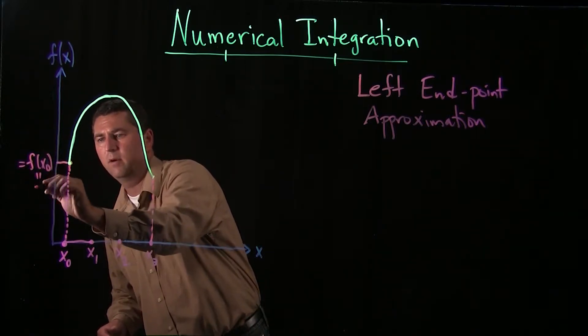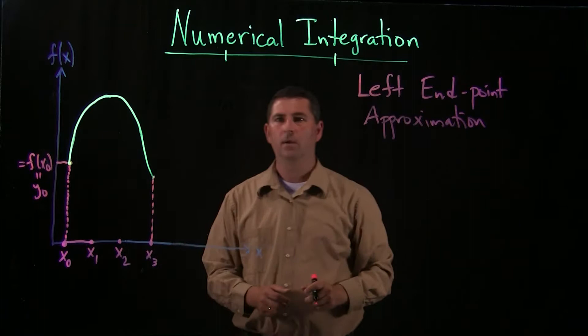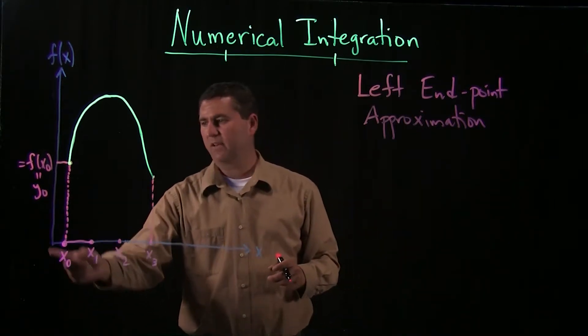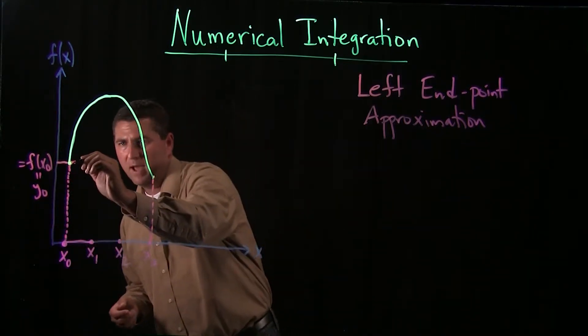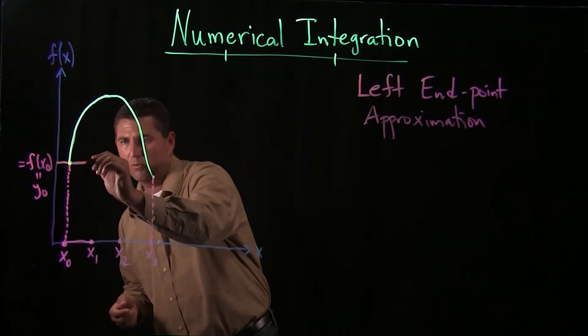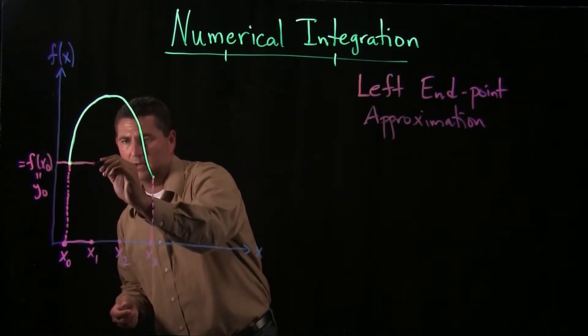So the input is x sub 0, the output is y sub 0. So that's going to be the height of the rectangle, and the base goes all the way from x0 to x1.